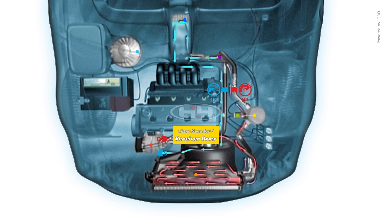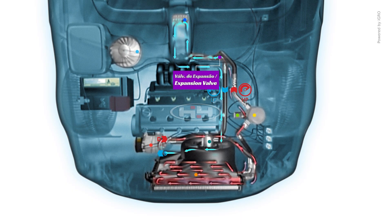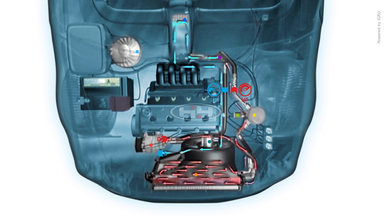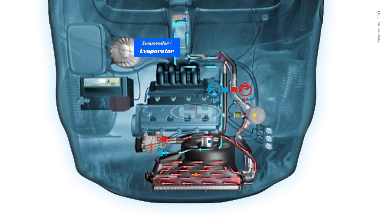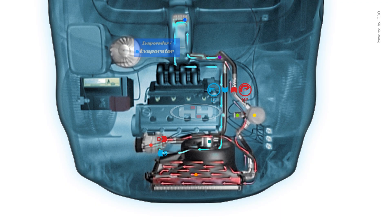The cooled liquid refrigerant flows to the expansion valve, where the high pressure of the refrigerant forces it through a small orifice or hole, ejecting the refrigerant as a mist that is then able to expand. The low-pressure mist refrigerant now flows into the evaporator, where the refrigerant absorbs this heat. It vaporizes and changes back to a gas.